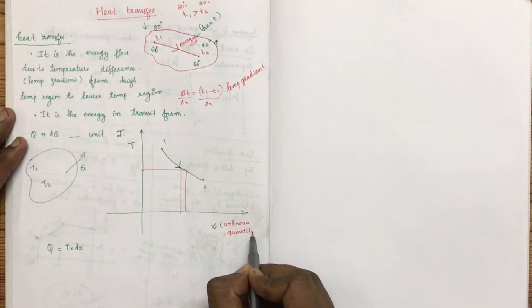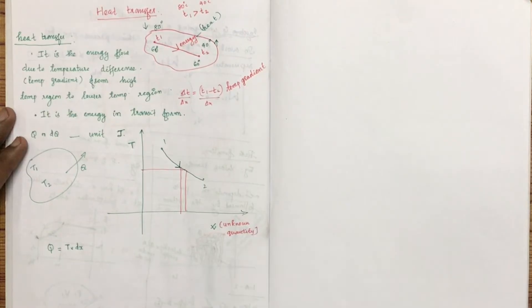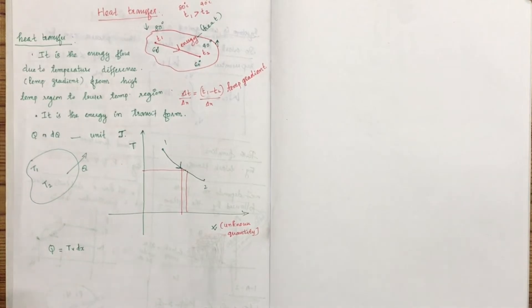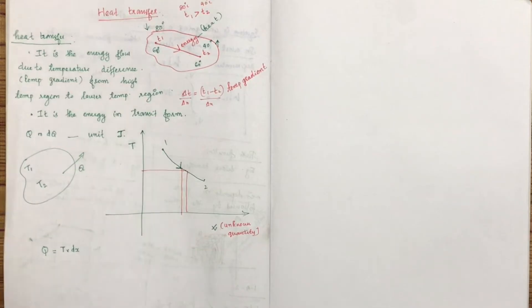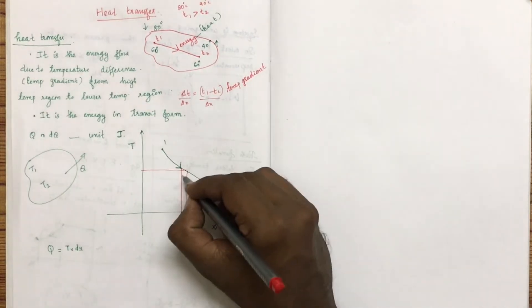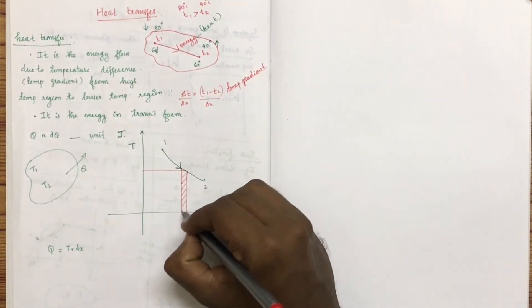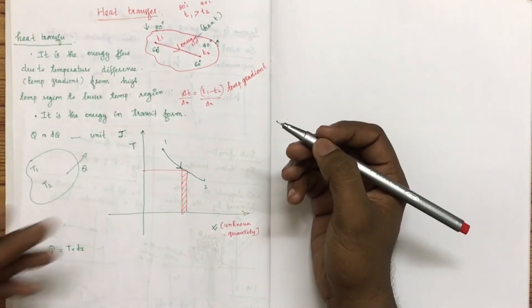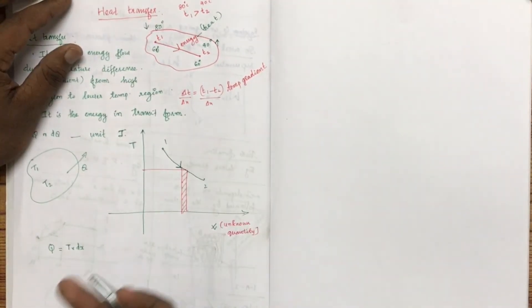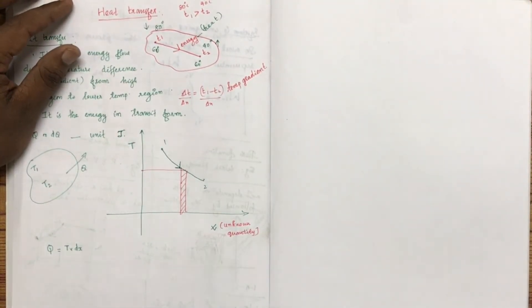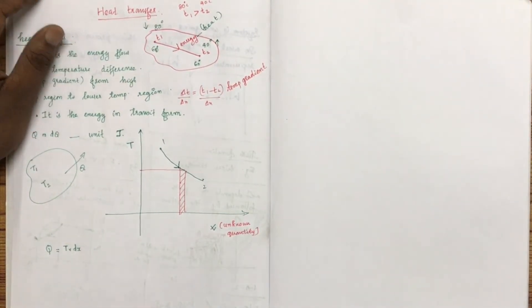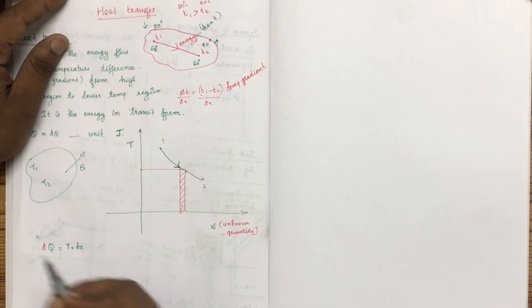We can refer to the second law of thermodynamics. We are going to use the T-S diagram of thermodynamics. What do you mean by entropy? Entropy is expressed as dQ — the elemental heat transfer divided by temperature.